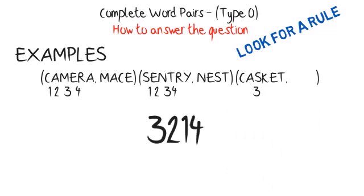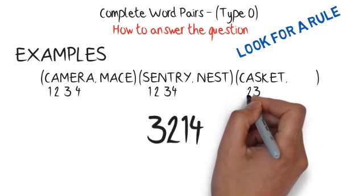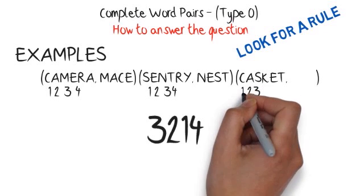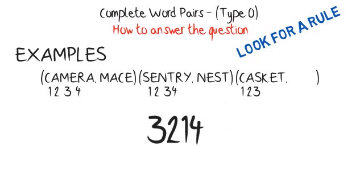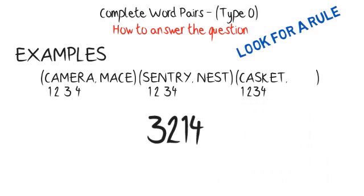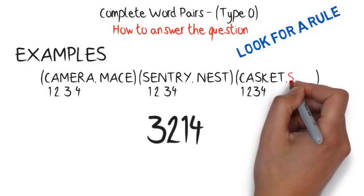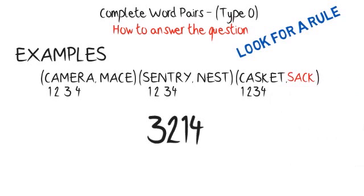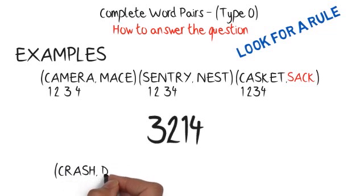Now we know the rule, we can use it to work out the missing word in the third group. Position 3 is S, position 2 is A, position 1 is C, and position 4 is K. Put these letters together and they make the word SACK. The missing word from the third group is SACK. Next example: crash, dash; flash, gash; shape, ?